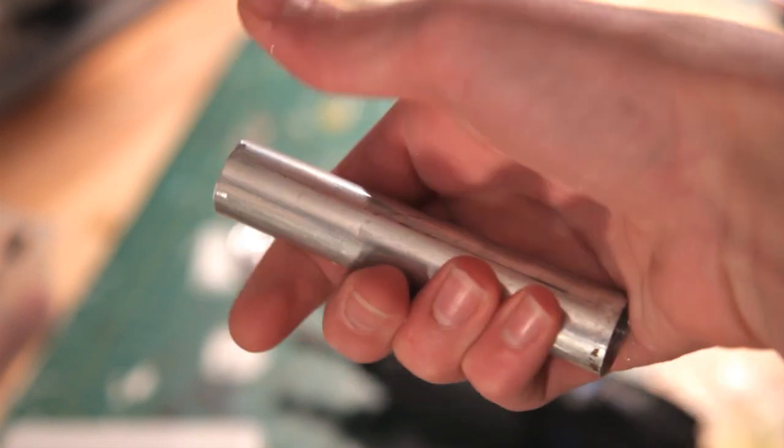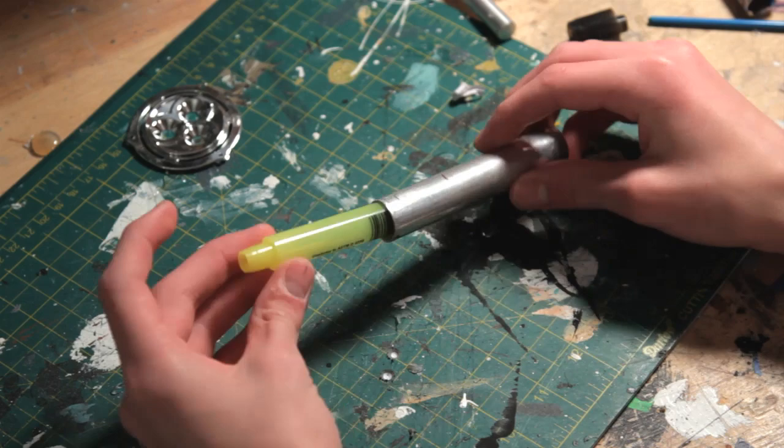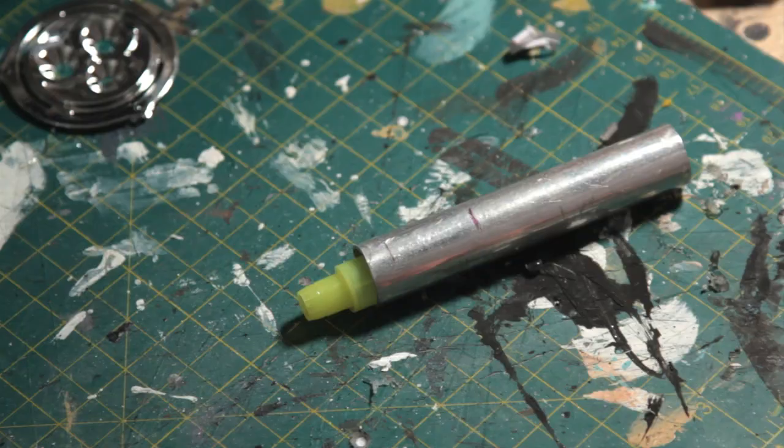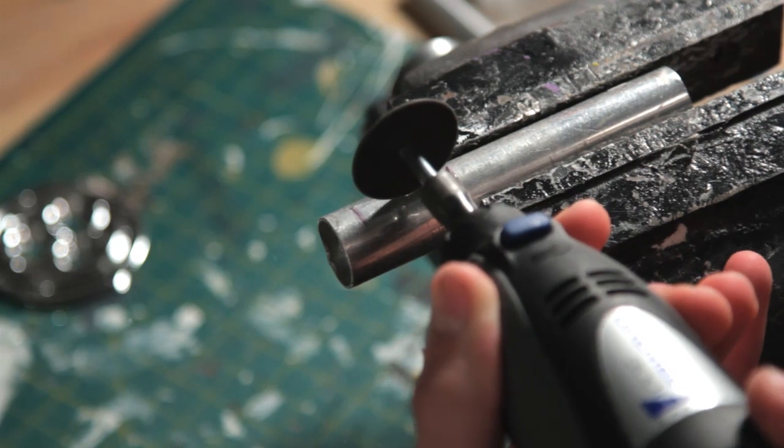The first step in this project is to cut your metal tube to about 4 inches. Next, I inserted my highlighter and decided where I wanted the cuts in the metal pipe to be. I marked the metal pipe with pen and used my Dremel to cut a slit about a quarter of an inch wide.